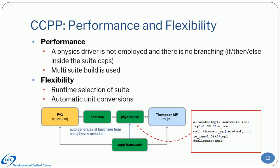On the other hand, it offers flexibility for research and development. Flexibility is attained in various ways — one is that suites can be chosen at runtime. Another is that CCPP supports automatic unit conversions to expedite the development and transition of innovations. For example, Fv3 provides cloud-effective radii in microns, but the Thompson microphysics expects them in meters. The framework detects this discrepancy from parsing the metadata tables at build time, and inserts the appropriate variable transformations before entering and after returning from the microphysics into the auto-generated physics suite cap.